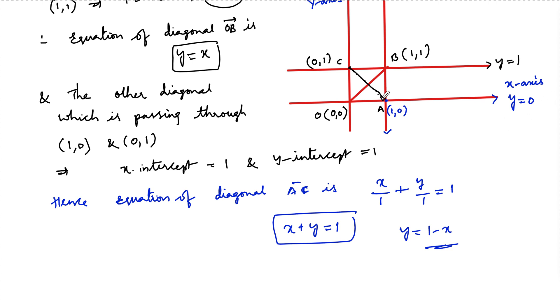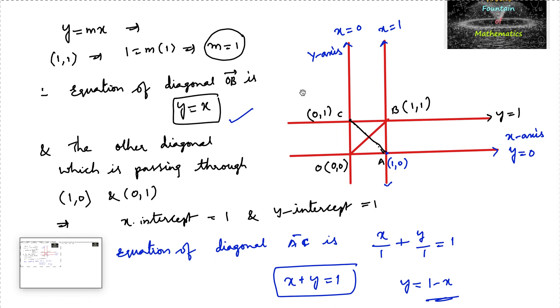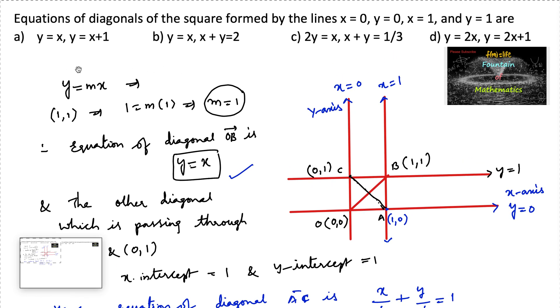So therefore the diagonals are y is equal to x is one equation and y is equal to 1 minus x. Let us see the option. So we have y is equal to x in only first option and second option, but y is equal to 1 minus x we don't have. So the answer is y is equal to x and y is equal to 1 minus x or x plus y is equal to 1. So there is no option here, but this is the answer.